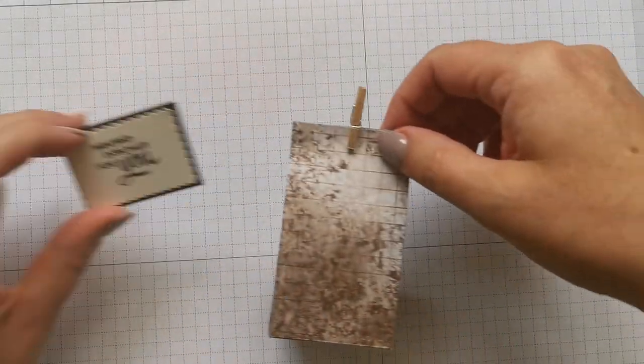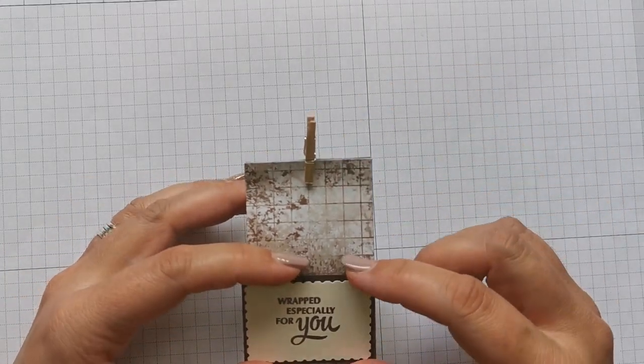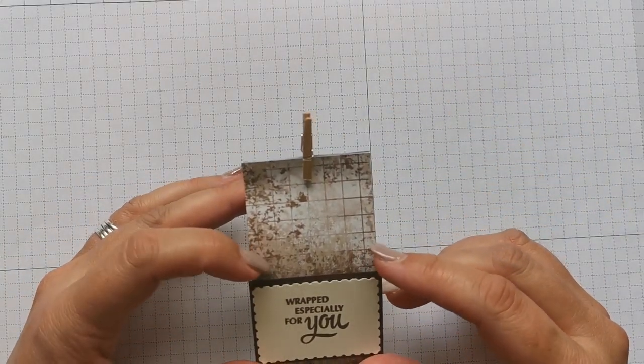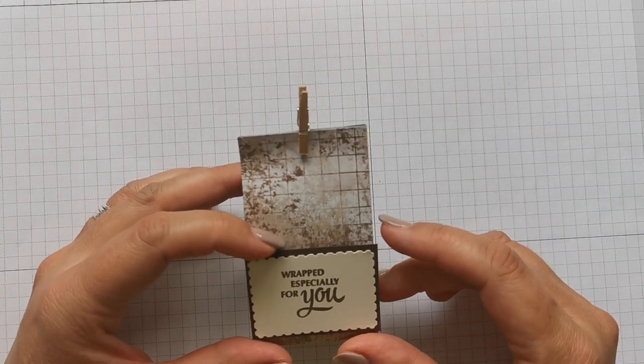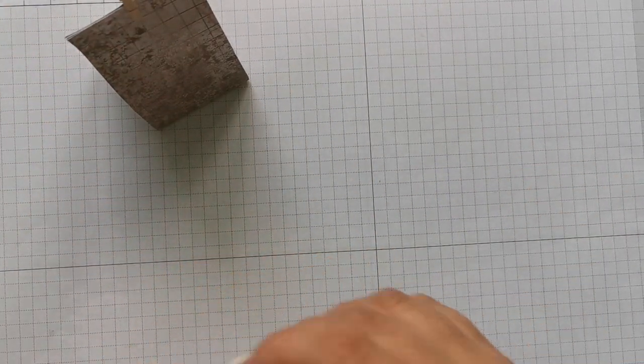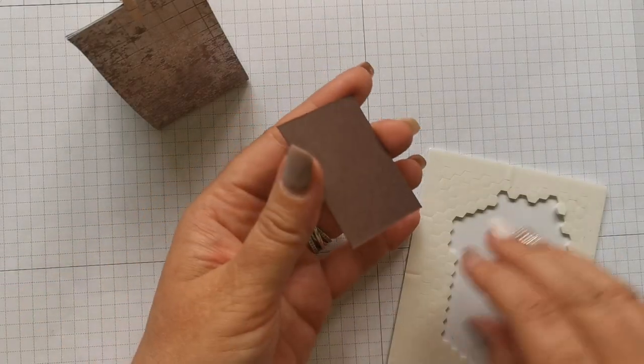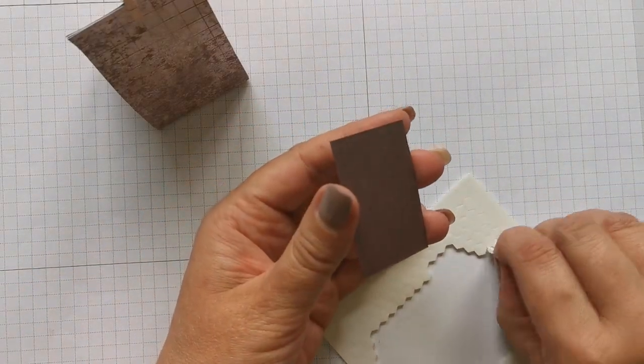Just with some mini dimensionals, I'm just going to stick this onto that piece of Early Espresso. And then get that on there central. Ready then to put onto the box. And that just kind of, it's a little bit bigger than the box. Could have had it that way possibly, but it doesn't matter. So again, some dimensionals on the back of this.